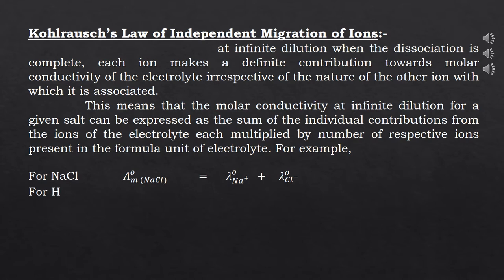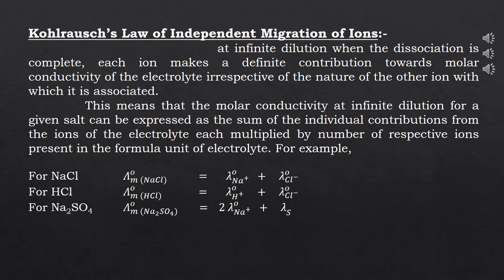Similarly, for HCl, λM0 for HCl is equal to the sum of λM0 for H⁺ ions and λM0 for Cl⁻ ions. For sodium sulphate, two Na⁺ ions are present in the formula, so λM0 for sodium sulphate is equal to twice the λM0 for sodium ions plus λM0 for sulphate ions.